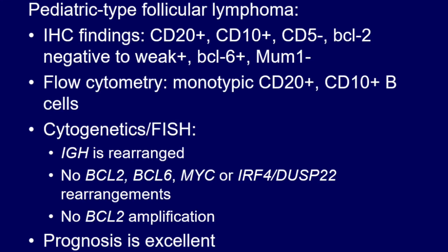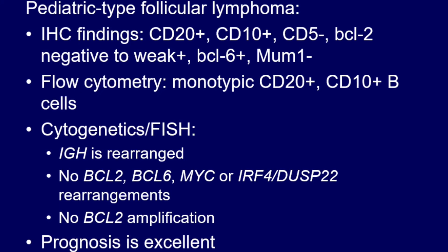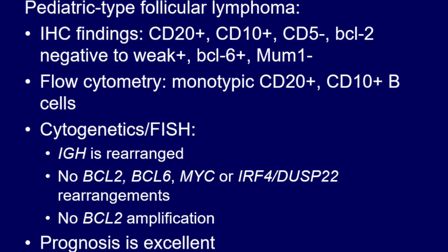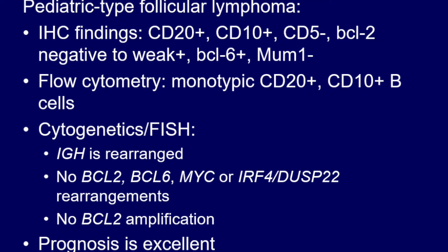IHC often shows CD20 positive, CD10 positive, CD5 negative, BCL2 usually negative to weak, BCL6 can be positive, and MUM1 should also be negative in these cases.